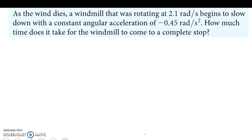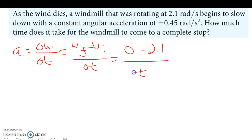When the wind dies, a windmill that was rotating at 2.1 radians per second begins to slow down with a constant angular acceleration of -0.45 radians per second squared. How much time does it take for the windmill to come to a complete stop? We want this thing to stop spinning. Angular acceleration is change in angular velocity over change in time. Change in angular velocity is final minus initial over change in time. Angular acceleration final is going to be 0 because we're stopping. Initial 2.1, our change in time we're solving for.